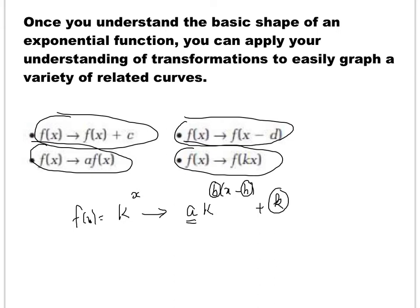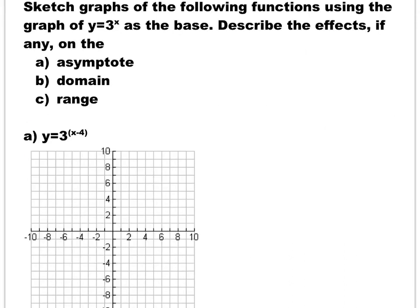All the coefficients behave exactly the same as before; the only difference is the base function, which is now an exponential function. In the first example, the base graph is y = 3^x. The transform function is y = 3^(x-4), and we are supposed to find the asymptote, domain, and range. Since we are talking about transformation, we will use the factors a, b, h, and k, find the mapping notation, and then use the new table of values.